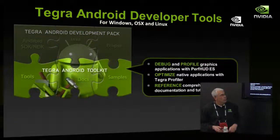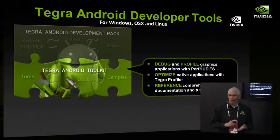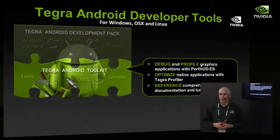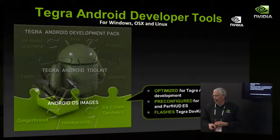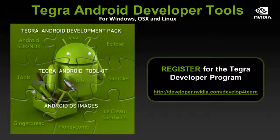The next component is what we call the Tegra Android Toolkit. This is your standard SDK, full of the tools you need for Tegra Android development — graphics debugging, CPU debugging, profiling, documentation for Android, Android lifecycle, and Tegra-specific documentation, as well as samples. This is sample code you can use across Android development, but specifically for Tegra development. We also put together Android OS images targeted specifically for debugging, pre-configured to work with our developer tools.